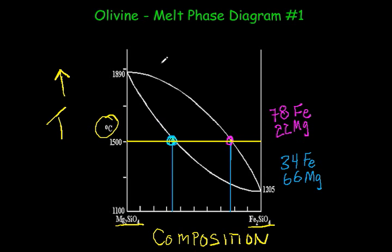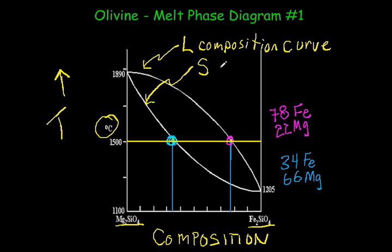Now, this curve here, the top curve, gives the compositions of the liquid. So this is called the liquid composition curve. And the lower curve is called the, well, you can probably guess, it's the solid composition curve.